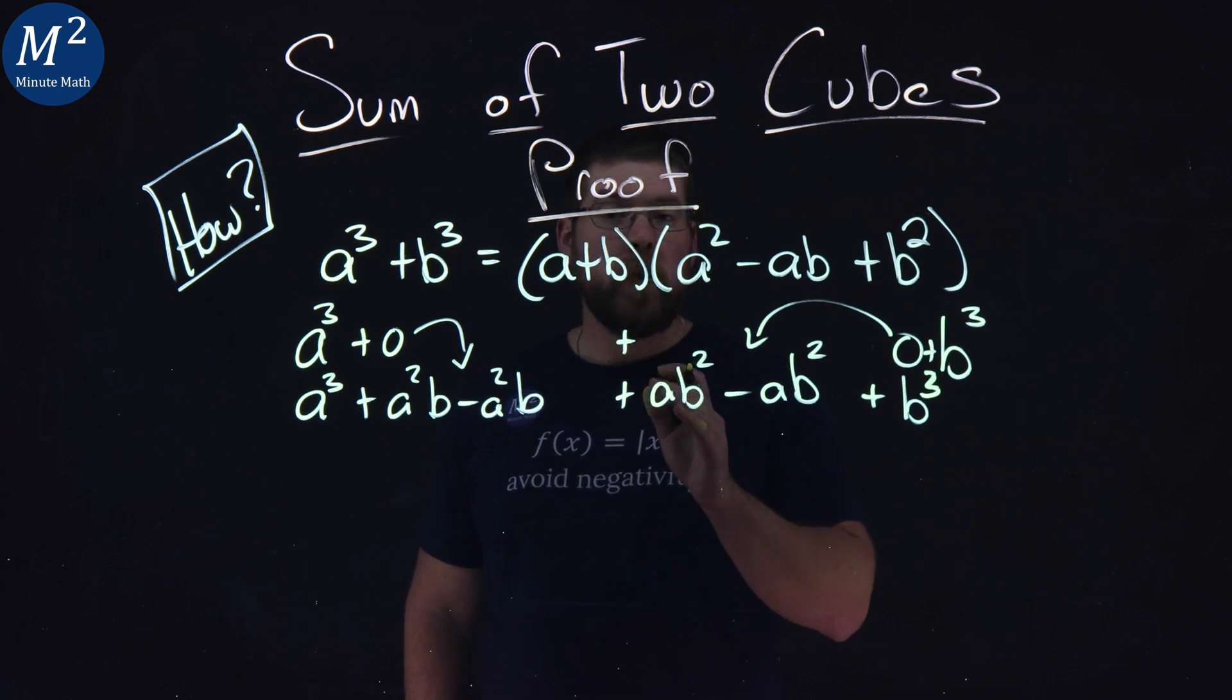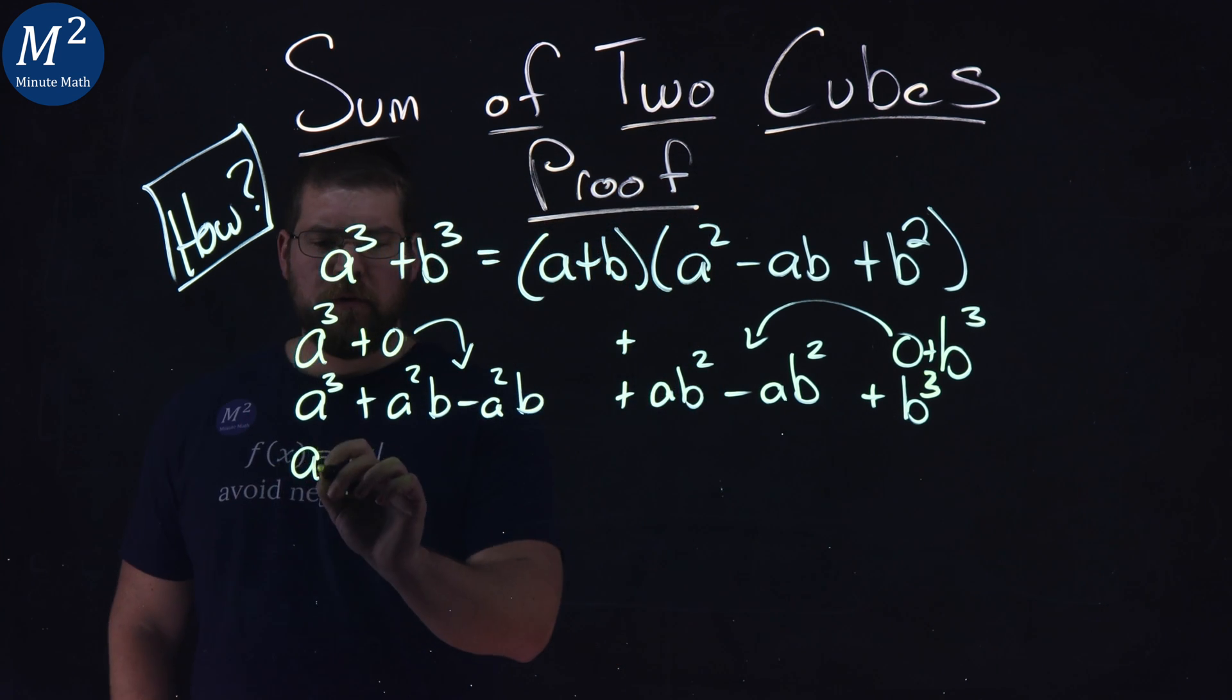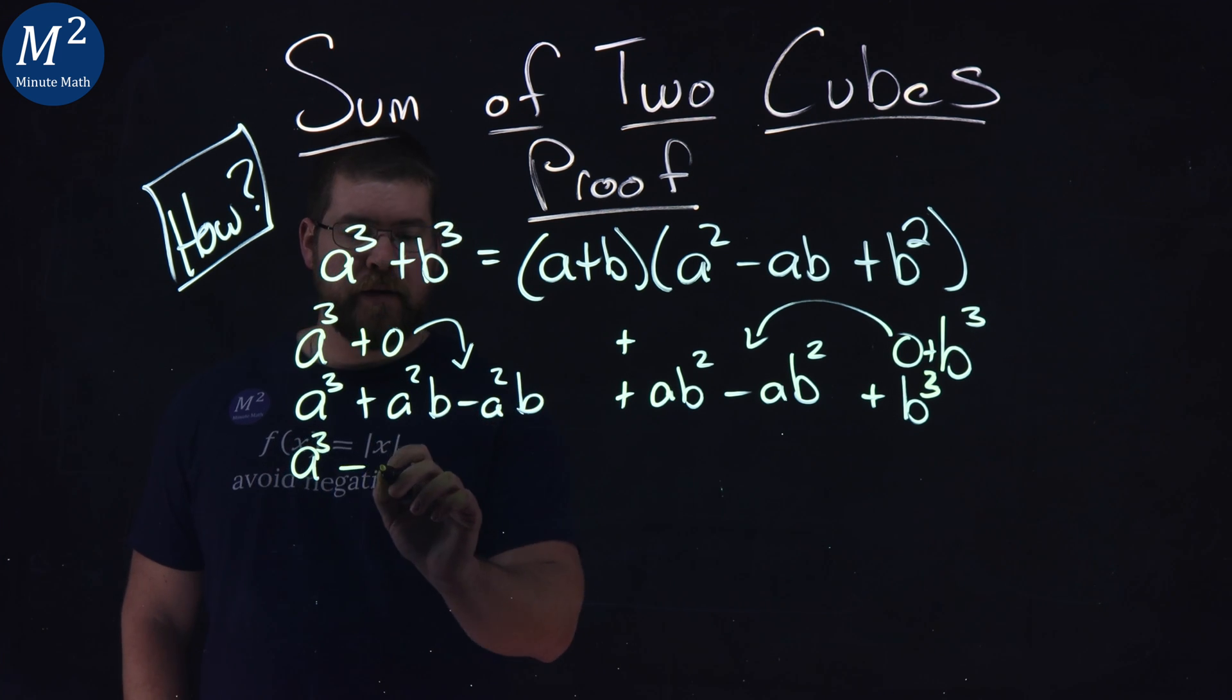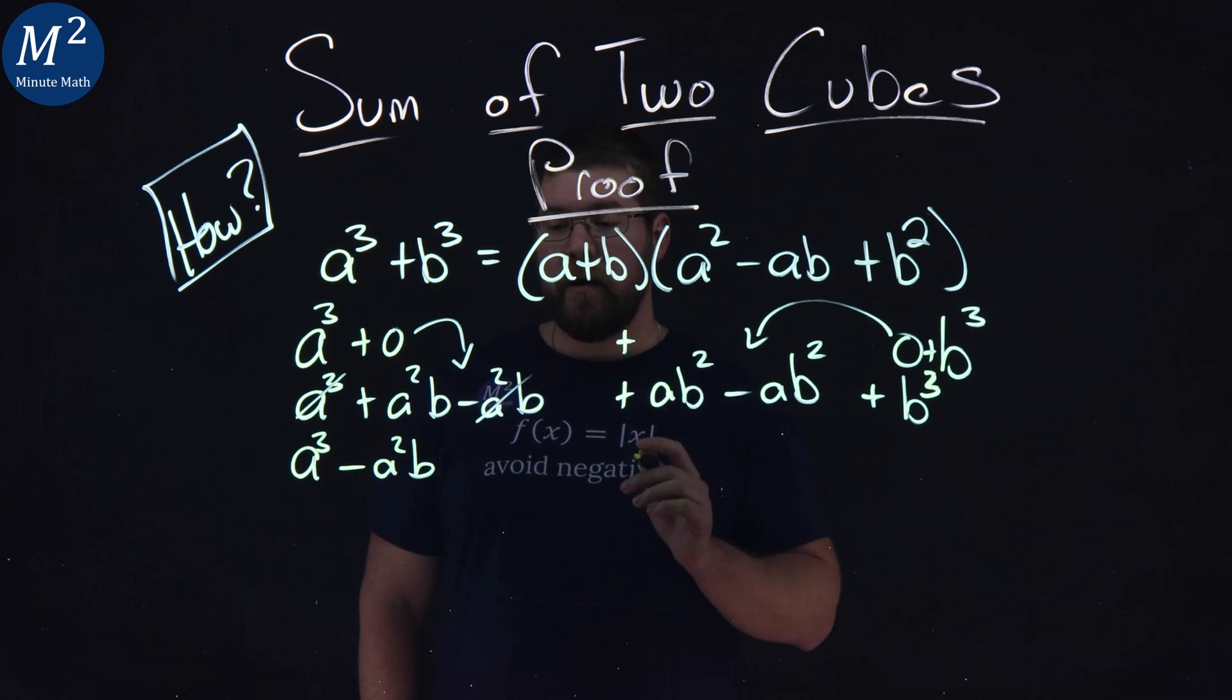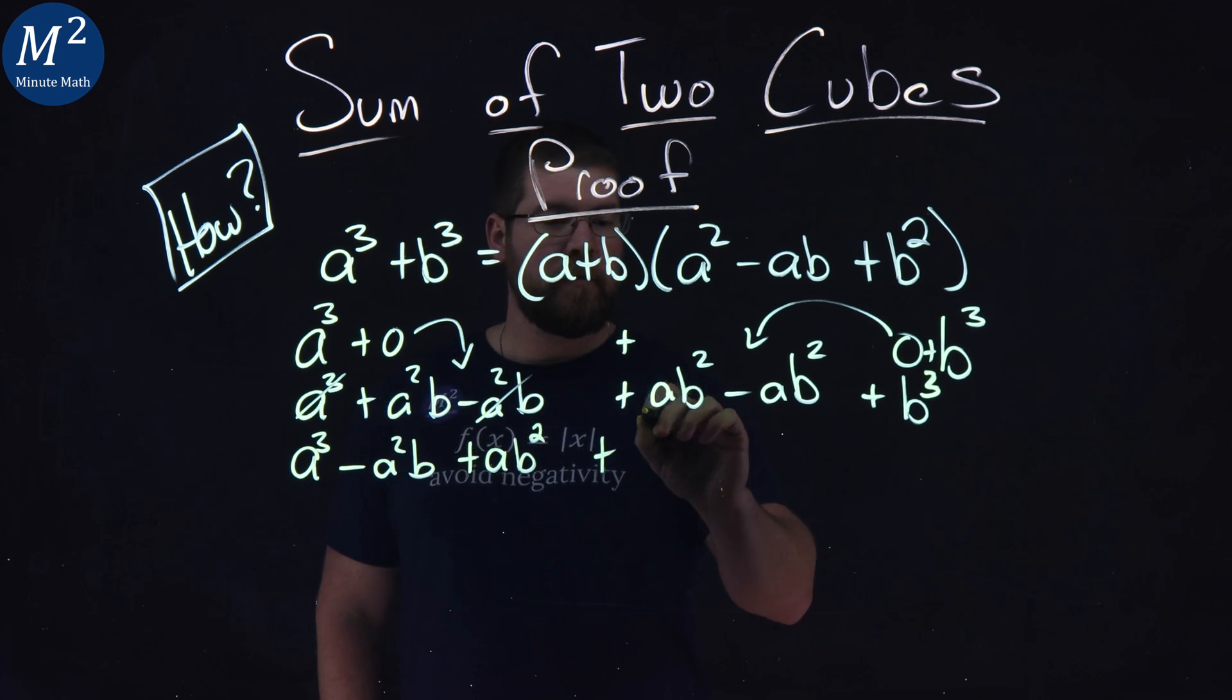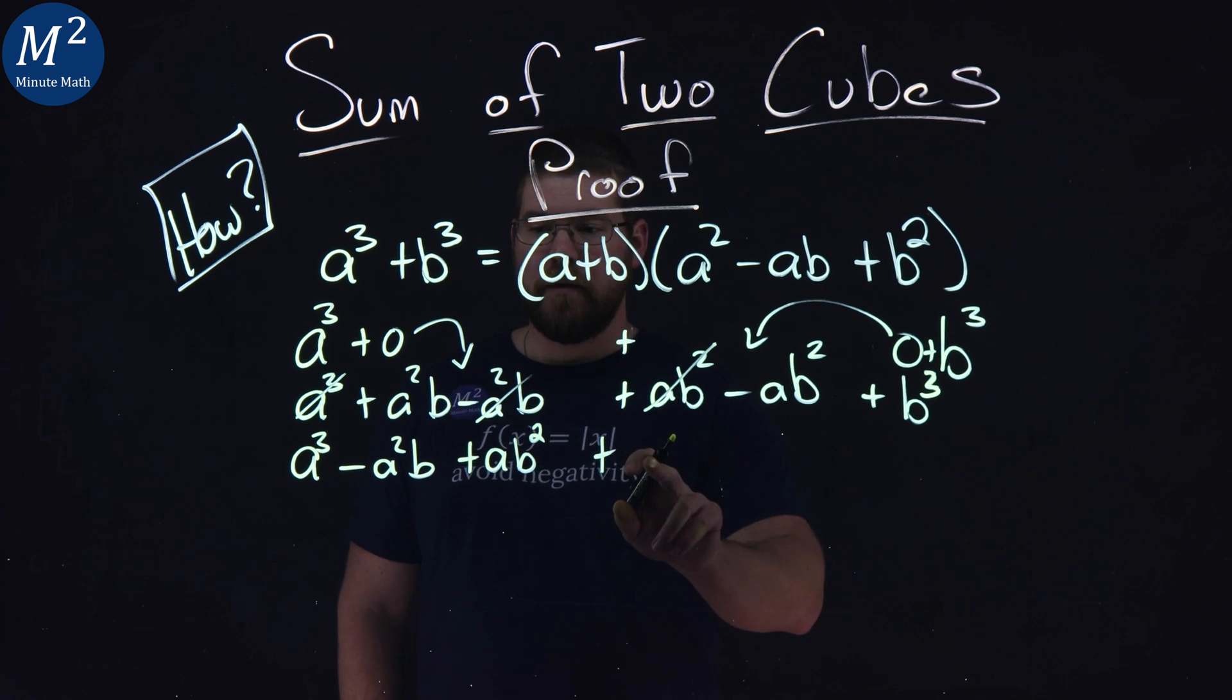Now from here I'm going to reorder what I've written. I'm going to keep my a cubed right here. Then I'm going to bring down this minus a squared b and let's cross it off so we know we've used it. From there I'm going to bring over this plus ab squared. Here, cross that off.